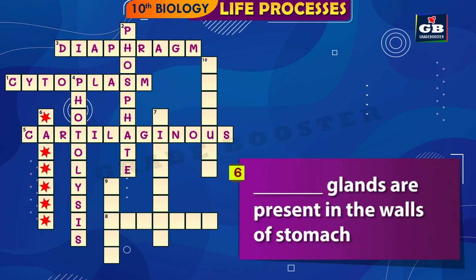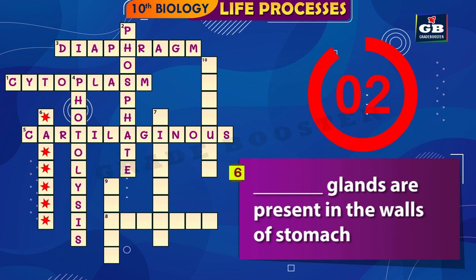6 Across: Dash glands are present in the walls of the stomach. The answer is gastric. Gastric glands are present in the walls of the stomach.